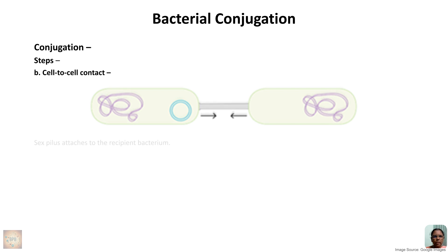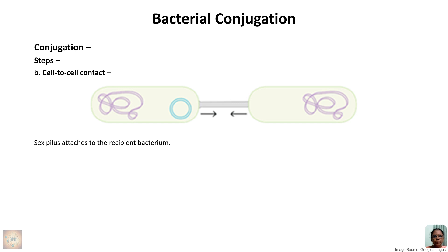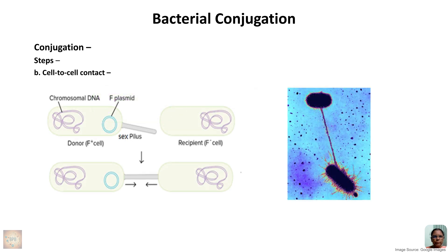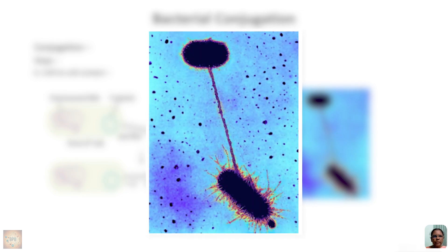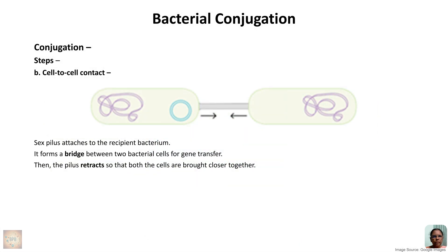The second step is cell-to-cell contact. The sex pilus attaches to the recipient bacterium, establishing a physical connection between the donor and recipient cells — acting as a bridge for gene transfer. The donor cell comes nearer and gets attached to the recipient cell via the sex pilus. The pilus then retracts, bringing both cells close together, forming a link between the two cells.